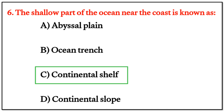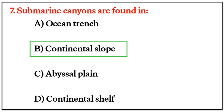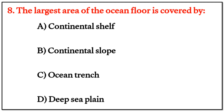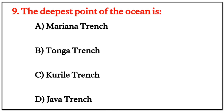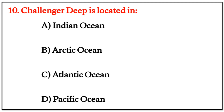MCQ Question 6: The shallow part of the ocean near the coast is known as — the right answer is C: continental shelf. Question 7: Submarine canyons are found in — the right answer is B: continental slope. Question 8: The largest area of the ocean floor is covered by — the right answer is D: deep sea plain. Question 9: The deepest point of the ocean is — the right answer is A: Mariana Trench. Question 10: Challenger Deep is located in — the right answer is D: the Pacific Ocean.